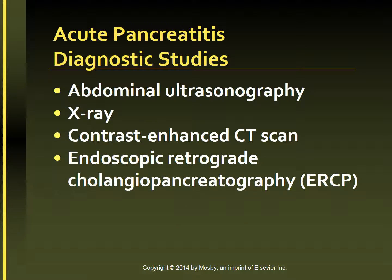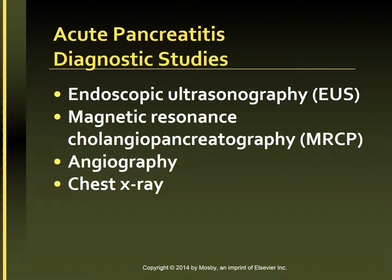Diagnostic evaluation is also directed at determining the cause. Abdominal ultrasonography, X-ray, or contrast-enhanced CT scanning can identify pancreatic problems. CT scan is the best imaging test for pancreatitis and related complications such as pseudocysts and abscesses. ERCP can be used, although it can cause acute pancreatitis in some cases. Additional studies including endoscopic ultrasonography (EUS), magnetic resonance cholangiopancreatography (MRCP), and angiography may also be done. Chest X-rays may show pulmonary changes including atelectasis and pleural effusions.